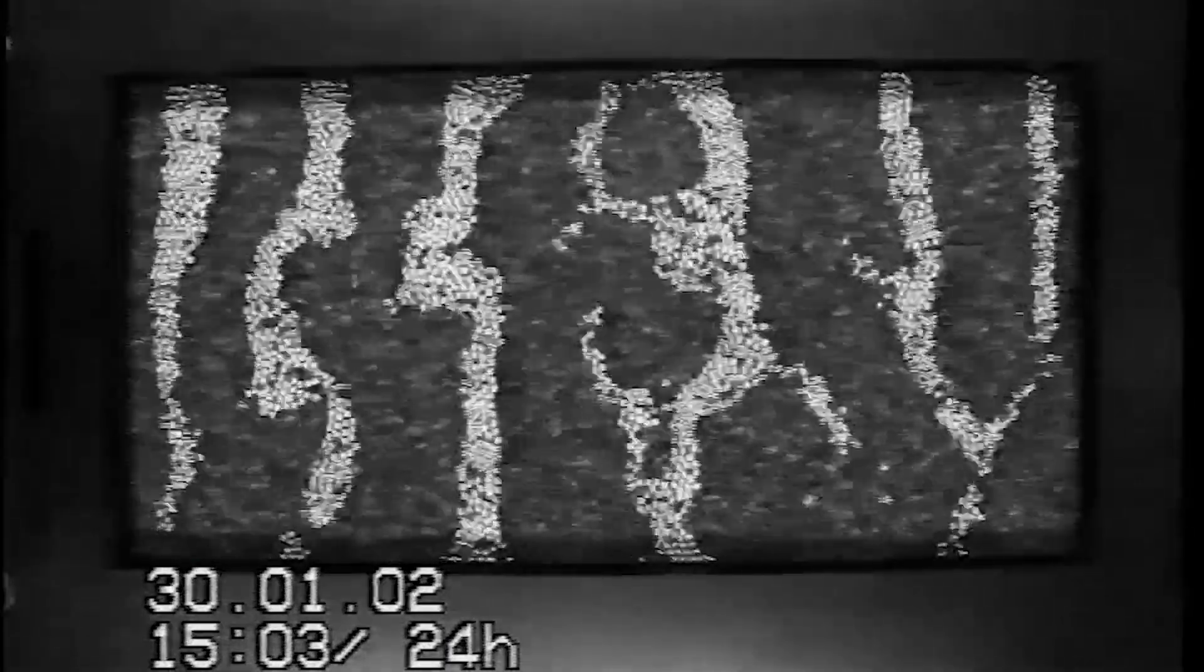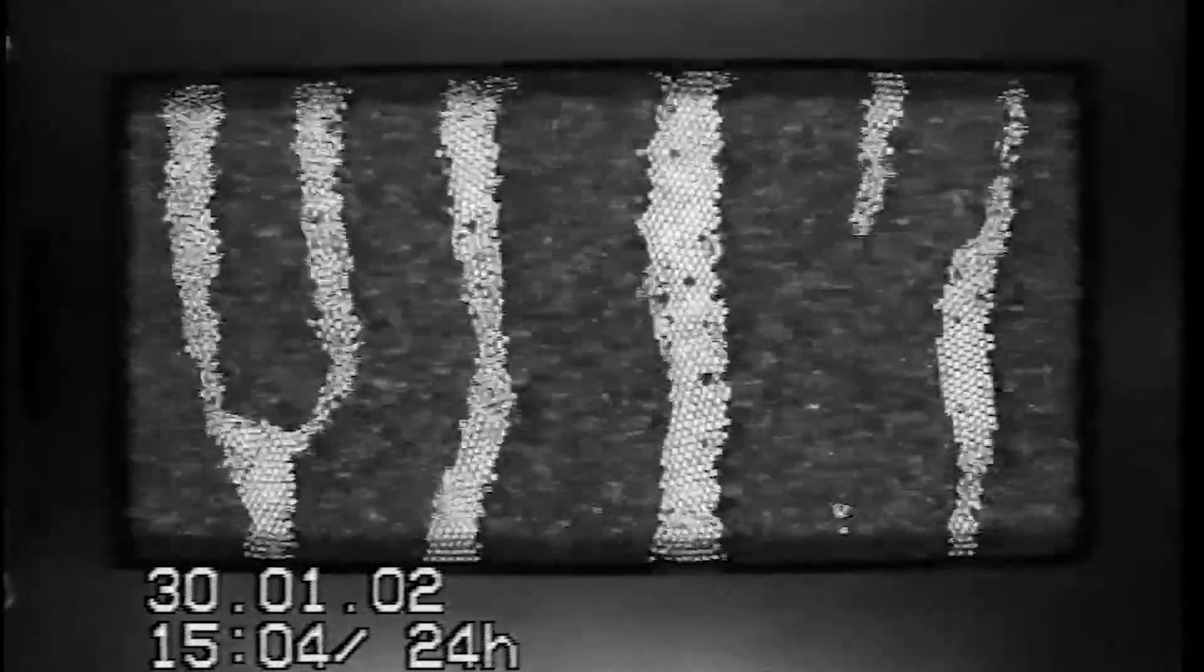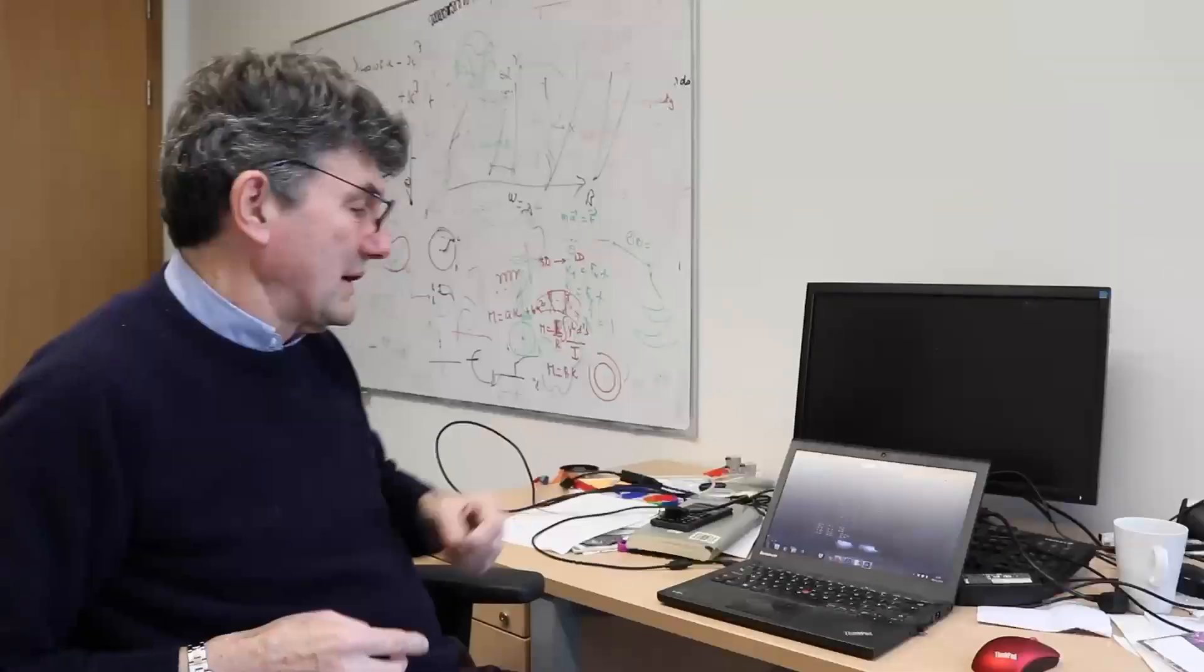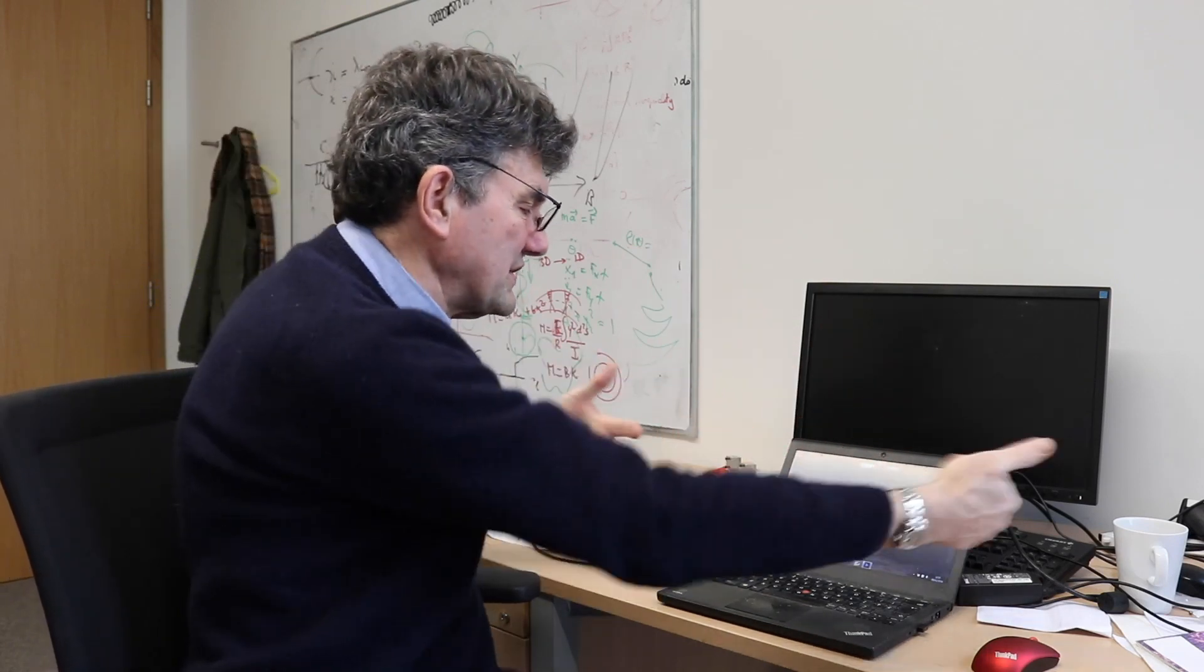We now look at a granular segregation problem. Here we have a tray of material which is a mixture of metal balls and poppy seeds. You're looking down at the top of a tray which is going to oscillate from side to side like this.